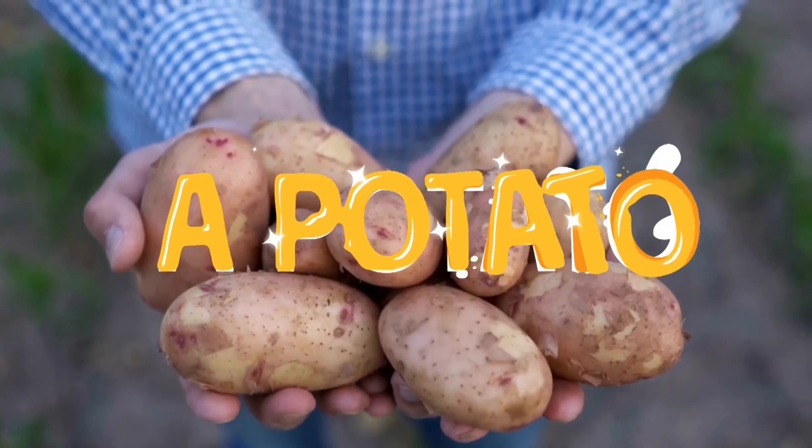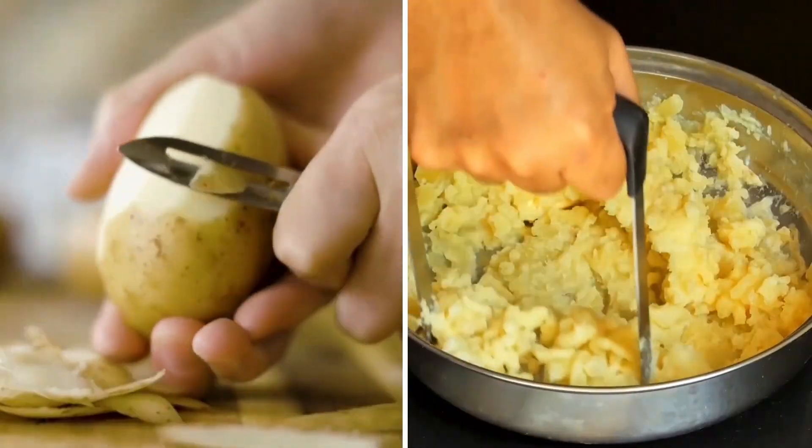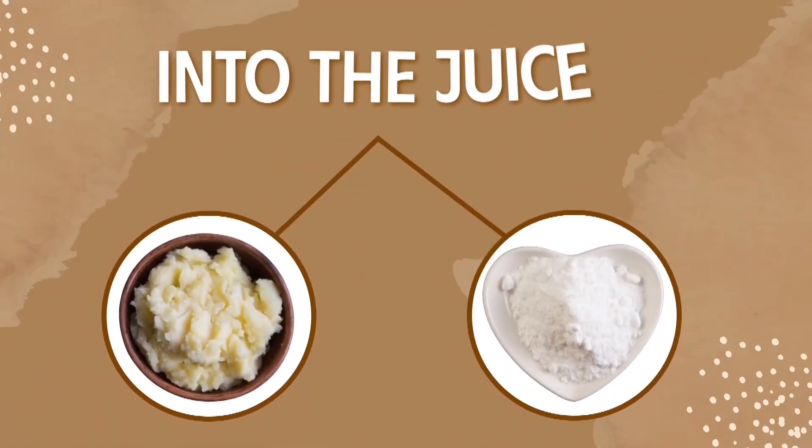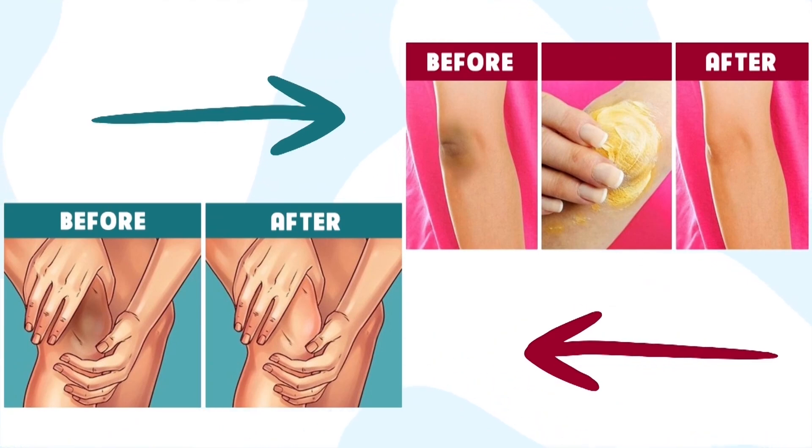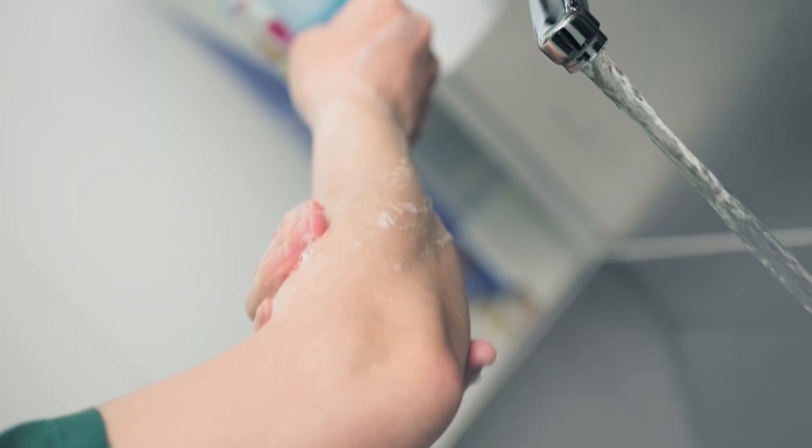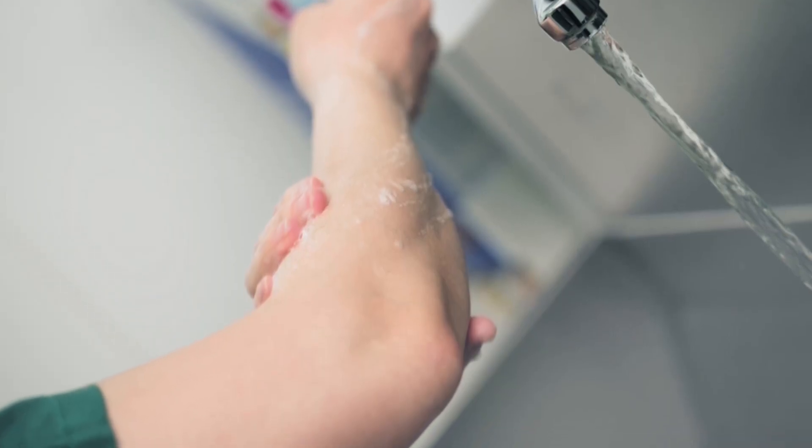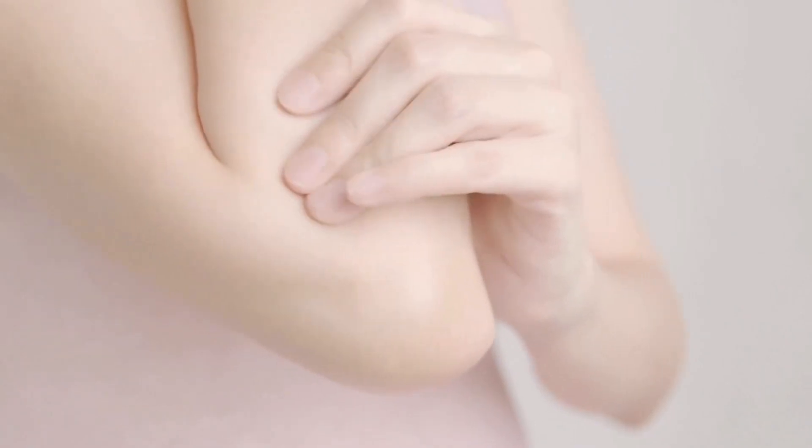If you have a potato at home, take good use of it. Peel a small potato and grate it finely. Squeeze out the potato and add a tablespoon of baking soda into the juice. Mix well. Then use a cotton ball to apply on your elbows and knees. Leave it for around 10 minutes and wash under the running water. Use this solution 1 to 2 times a week and enjoy a lighter shade.